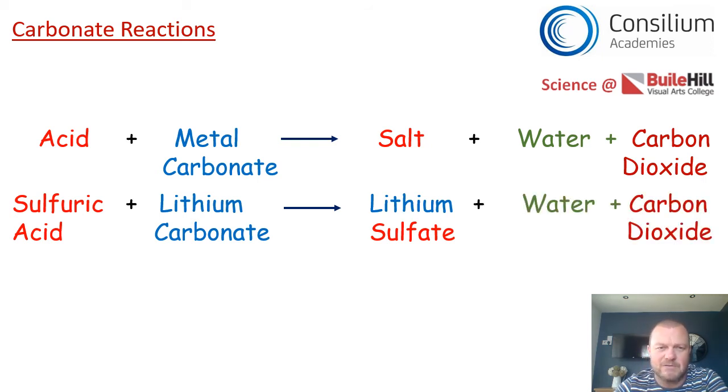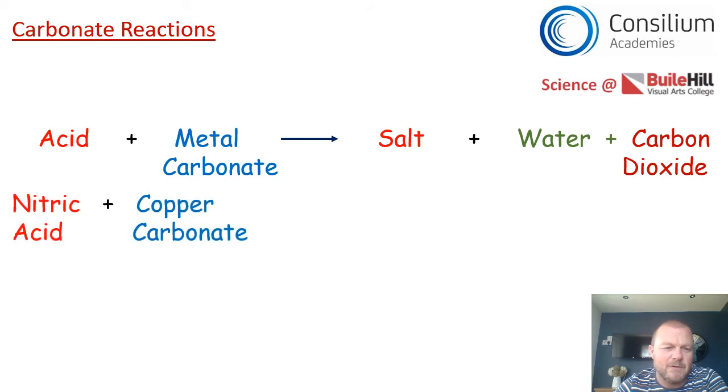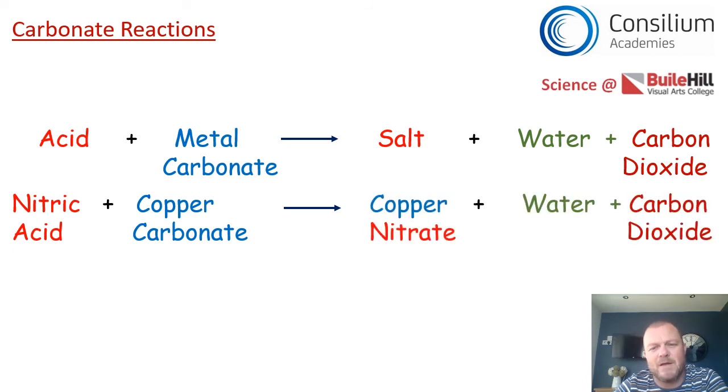We know that's our generic equation, that's the one we must always go back to. What about this example? What if it was nitric acid and copper carbonate? Pause the video now and see if you can work that one out. We've got copper as the name of our metal, we've got nitric acid so that's going to be nitrate, so we've got copper nitrate, the name of our salt, and it would make water and carbon dioxide.